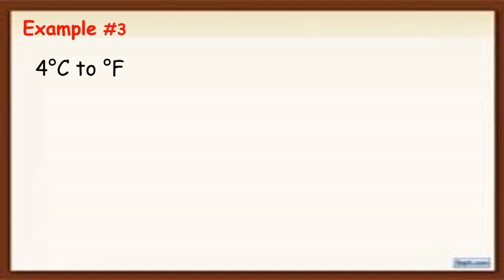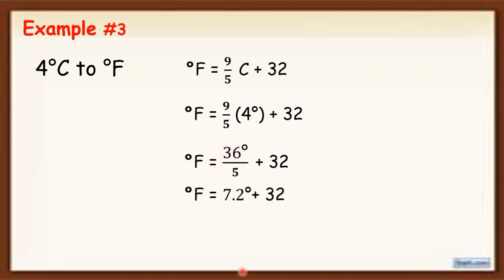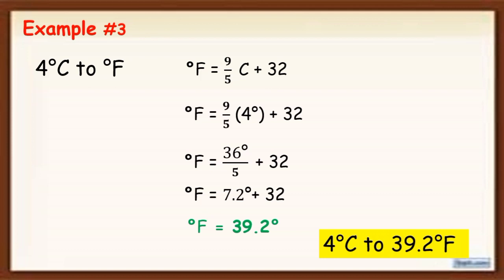Example 3: Convert 4 degrees Celsius to degrees Fahrenheit. Again, use the formula F = 9/5 × C + 32 and substitute C = 4. Multiply 9 × 4 = 36, giving 36/5 + 32. Bring down the 32 and simplify. 36 divided by 5 = 7.2, then 7.2 + 32 gives a final answer of 39.2 degrees. Therefore, 4 degrees Celsius is equal to 39.2 degrees Fahrenheit.